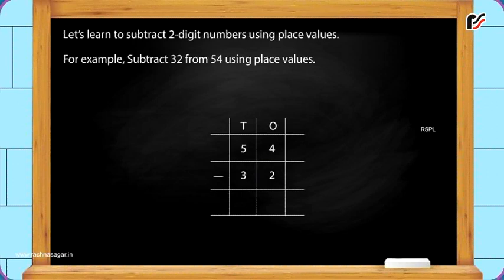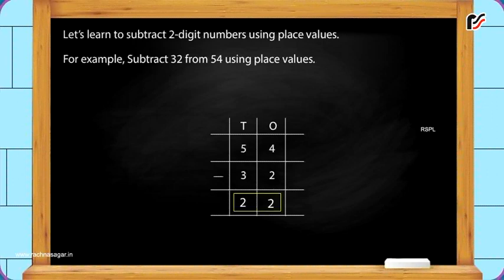Now, put the minus sign as shown. First, subtract the ones. Four minus two is equal to two. Write two under the ones column. Next, subtract the tens. Five minus three is equal to two. Write two under the tens column. Thus, the difference is 54 minus 32 is equal to 22.